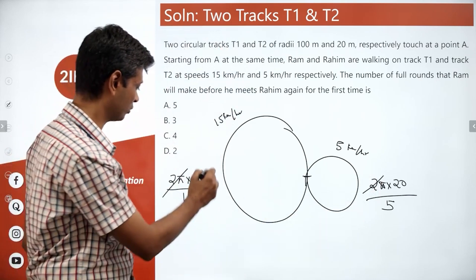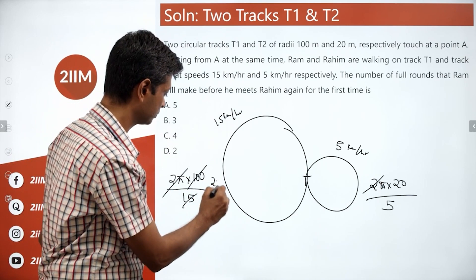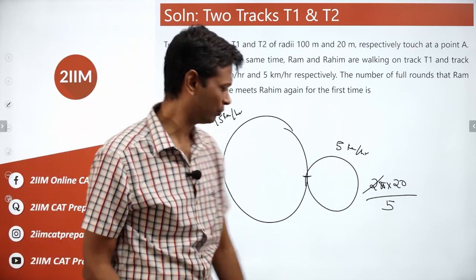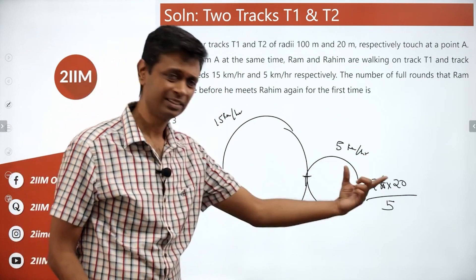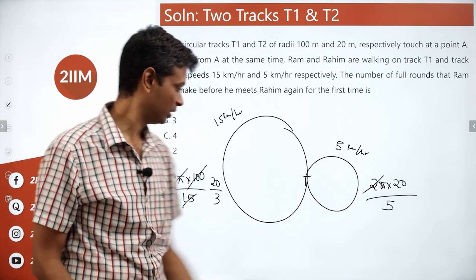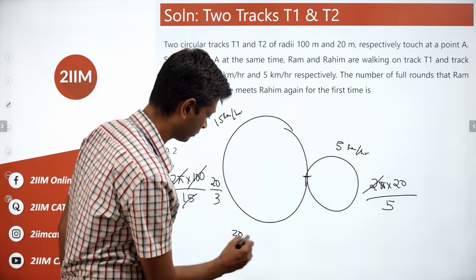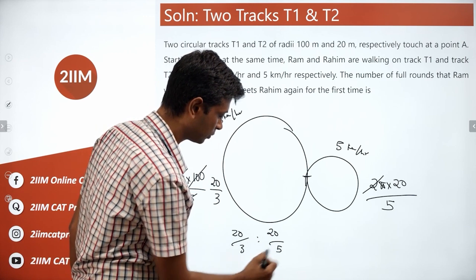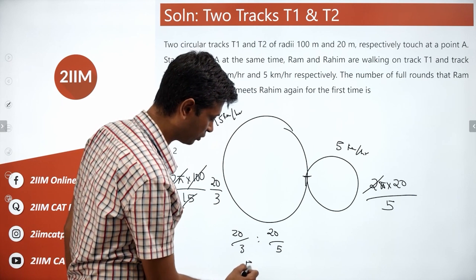This is 100 by 15. Let's knock it off. This is 20 by 3. This is 20 by 5. Or this is to that. Ratio of time taken is 20 by 3 is to 20 by 5. Or 1 by 3 is to 1 by 5 or 5 is to 3.